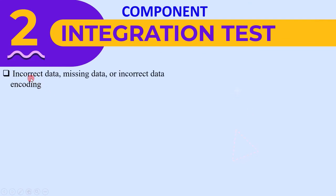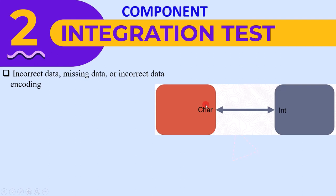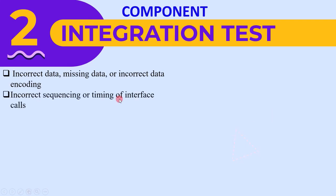In component integration testing, the first type of defect is incorrect data, missing data, or incorrect data encoding. During integration testing, data is transferred from one module to another, so we can find these data-related defects. For example, if one module is sending data in character form while the other is expecting data in integer form, we can find incorrect data related defects.